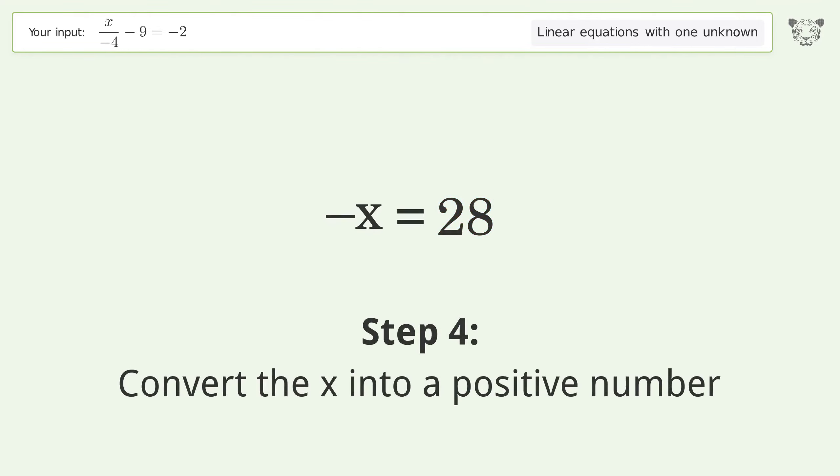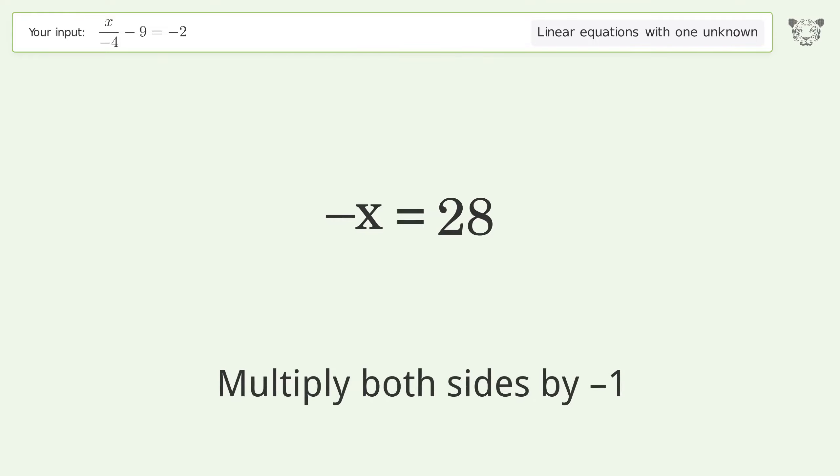Convert the x into a positive number. Multiply both sides by negative 1. Remove the ones. Simplify the arithmetic.